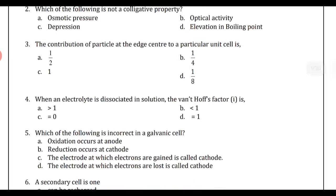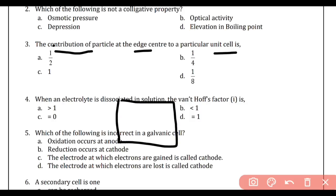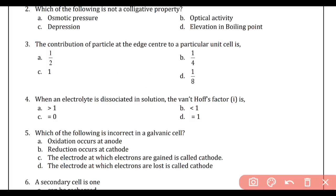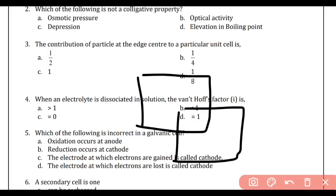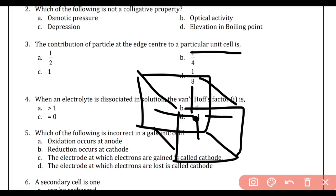Next: the contribution of a particle at the edge center to a unit cell — that's the question. We are finding the answer in the question itself. The contribution of a particle at the edge center to a unit cell — the particle is attached to four unit cells on that edge, so the contribution is 1/4. Easy — option B. Don't think much.